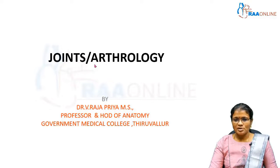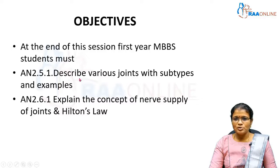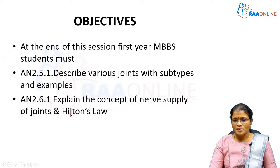Today's class is joints, arthrology. The objectives of this session are: at the end of this session, first year MBBS students must be able to describe various joints with subtypes and examples, and explain the concept of nerve supply of joints and Hilton's law.